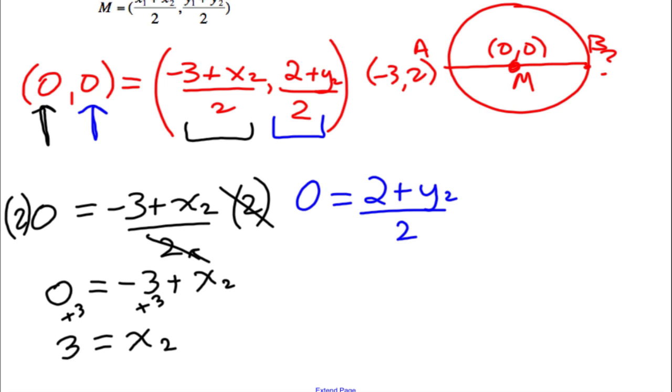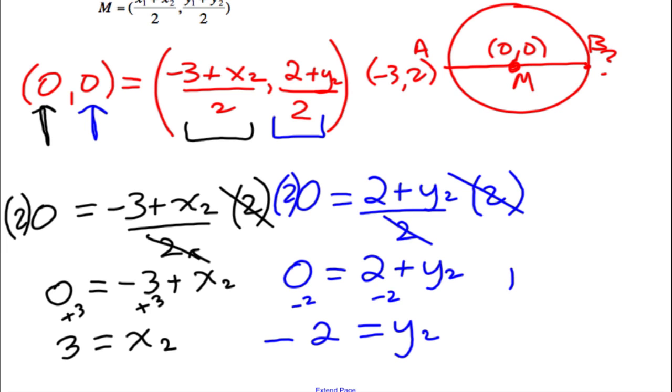And we find that 3 equals X2. We're solving for Y2. Remember, we're going to multiply both sides by 2. They cancel out. In order to isolate for Y2, we're just going to have to subtract 2 from both sides. 0 minus 2 is negative 2. And again, we find the other endpoint.